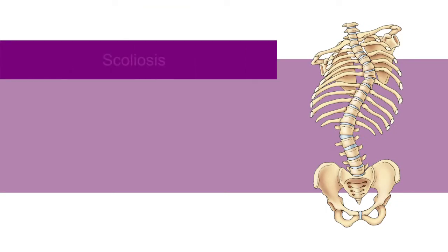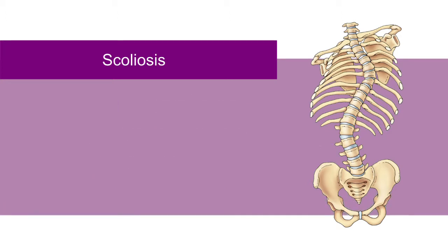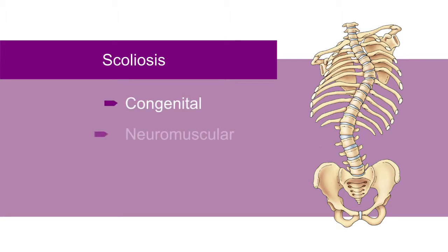Scoliosis is a sideways curvature of the spine. This curvature, and the rotation that goes with it, produces rib prominence, waistline asymmetry, and unevenness of shoulder and wing blades. Based on the cause, scoliosis may be further divided into congenital, neuromuscular, tumors, and idiopathic types.